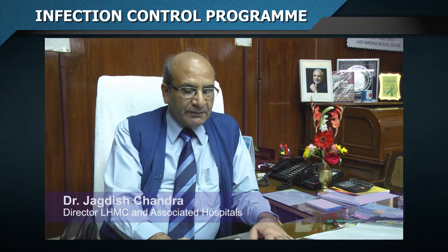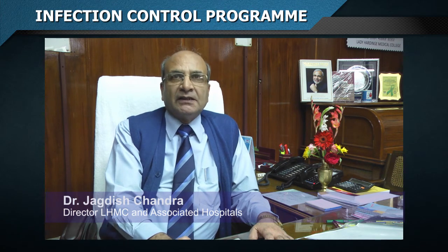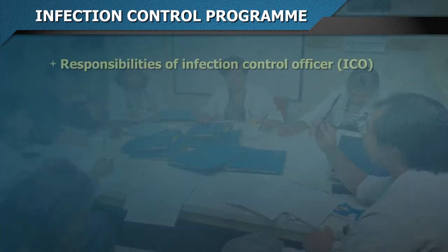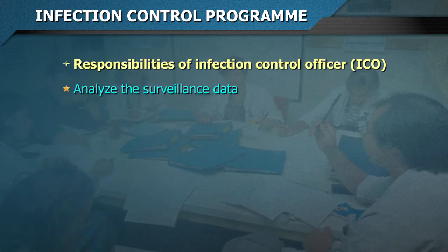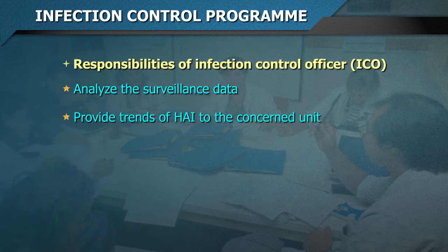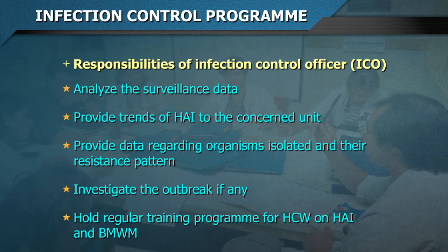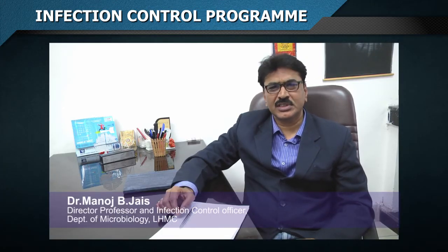The infection control team may consist of an infection control officer (ICO) and infection control nurses (ICN). The ICO's responsibilities include: analyzing surveillance data, providing trends of HAI to the concerned unit, providing data regarding organisms isolated and their resistance pattern, investigating infections and outbreaks, and holding regular training programs for healthcare workers on hospital acquired infections and biomedical waste management.